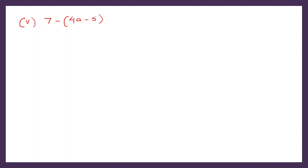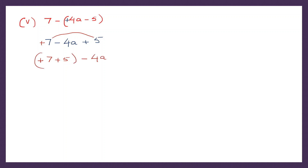Question 5. 7 we write as it is. Now minus — we need to change the sign of all the terms inside the bracket. So plus 4a becomes minus 4a, minus 5 becomes plus 5. Now we can put the signs wherever they're missing. These are like terms: plus 7 plus 5 together, and minus 4a is separate. When signs are the same, put the same sign and add: 7 plus 5 is 12. So our final answer is 12 minus 4a.